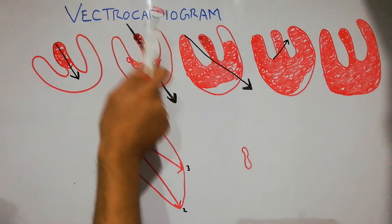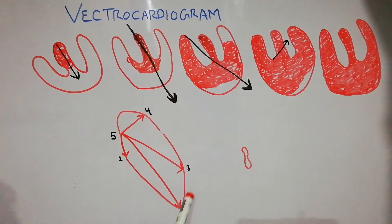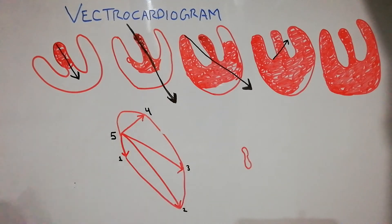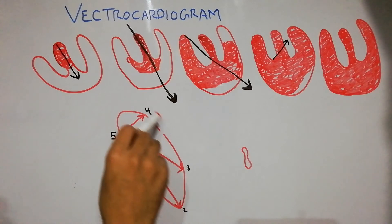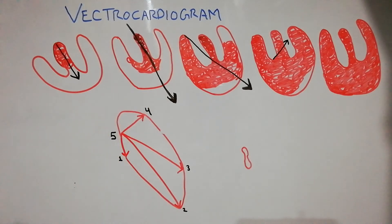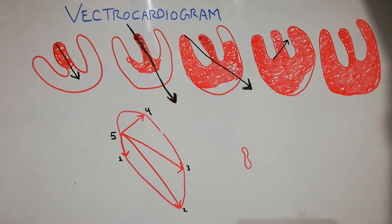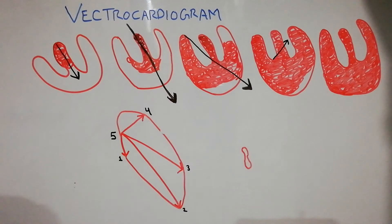This vectorcardiogram is for the depolarization process and it presents the QRS complex, so it is larger in size. The vectorcardiogram obtained during repolarization, which is presented with the help of the T wave, is small in size.